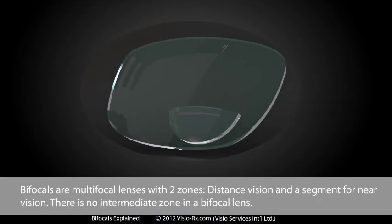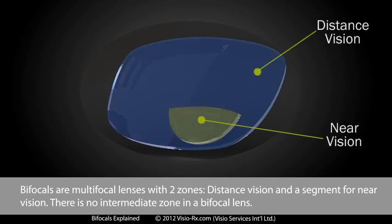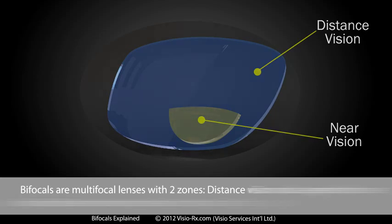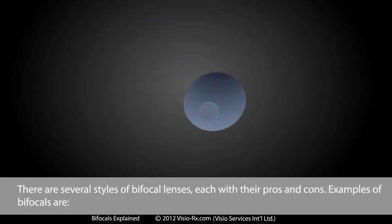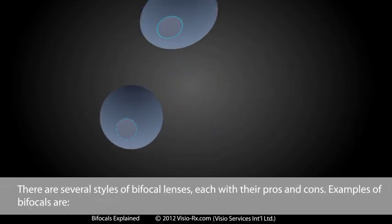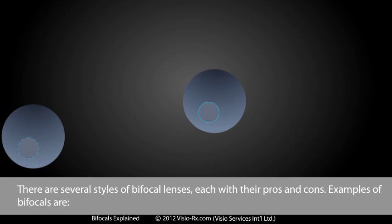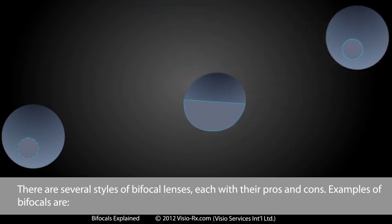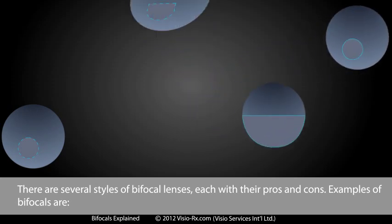Bifocals are multifocal lenses with two zones: distance vision and a segment for near vision. There is no intermediate zone in a bifocal lens. There are several styles of bifocal lenses, each with their pros and cons.